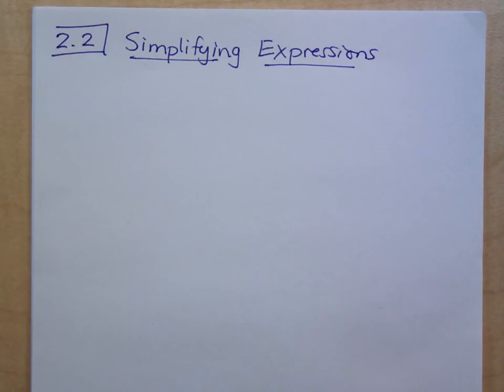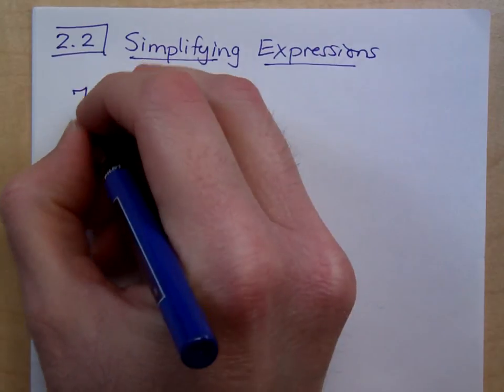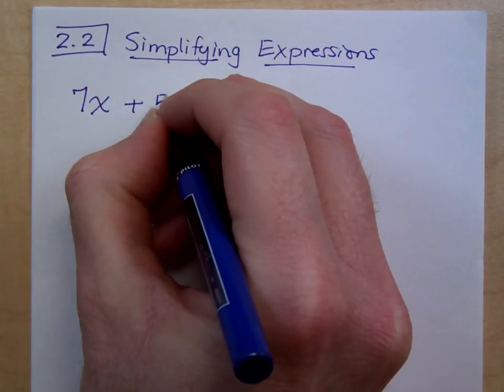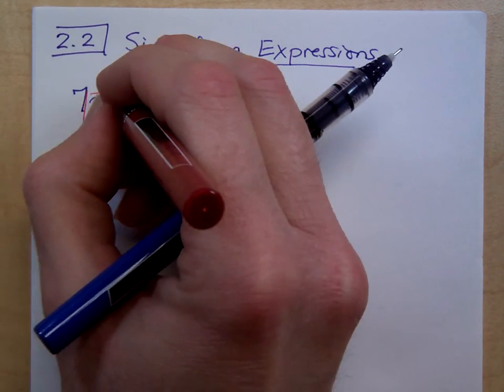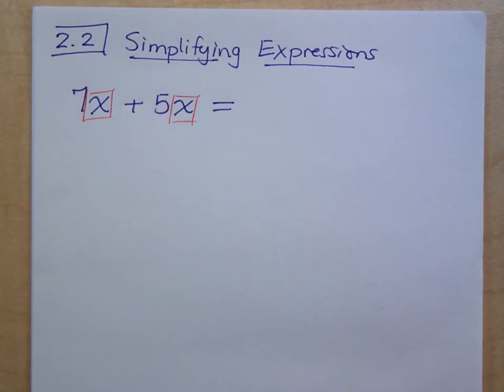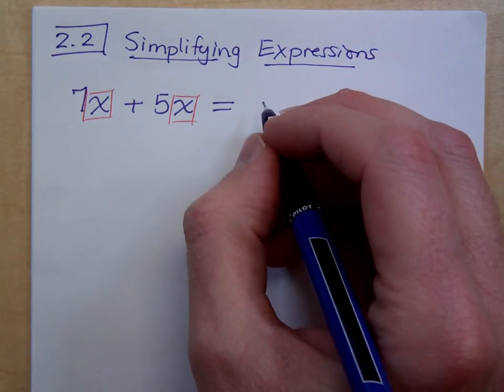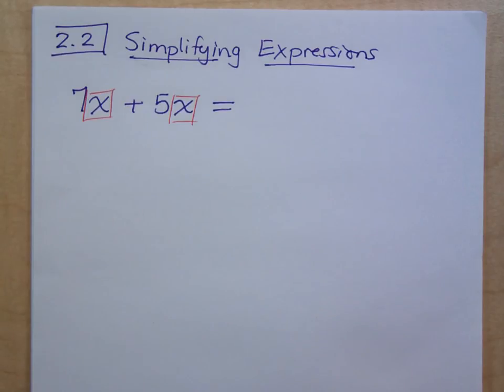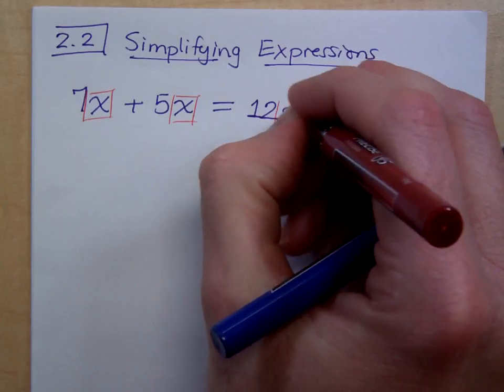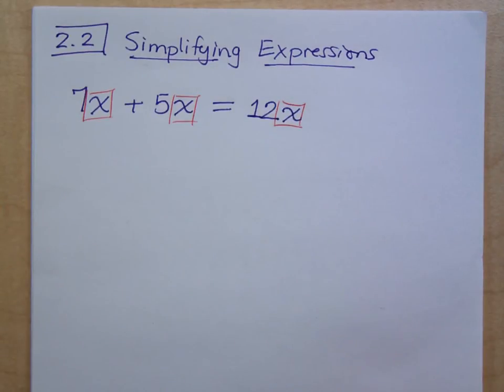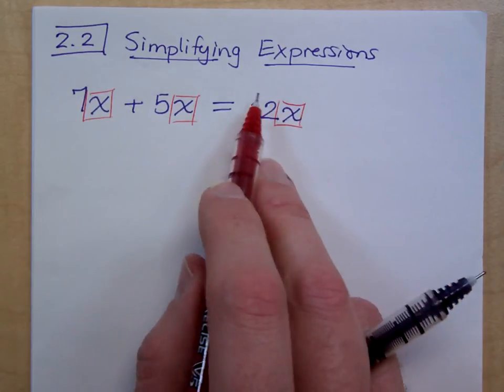You remember that word, right—coefficients. That means if I take something like 7x plus 5x, these guys are like terms because the variable components are exactly the same. Do you all agree? If the variable components are exactly the same, you just need to combine or add their coefficients. So what's 7x plus 5x? Let's slow it down. What's 7 plus 5? It's 12, and the answer is going to be 12x.